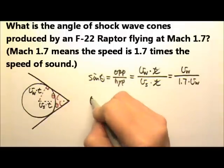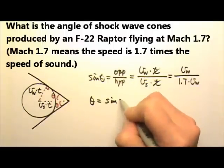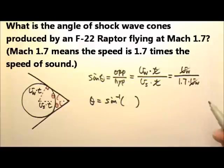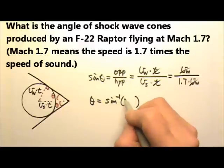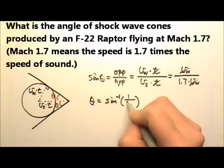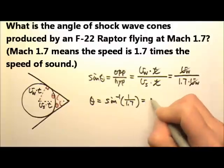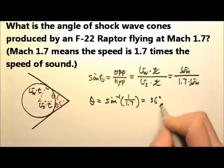So the angle is the inverse sine. And since the speed of sound cancels, this is 1 over 1.7, and you'll get 36 degrees. And that's the angle of the shock wave cone.